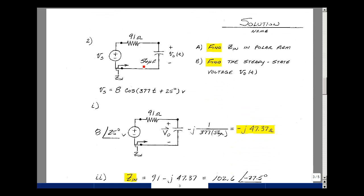Problem number two involves taking this RC circuit and finding Zin in polar form, and then finding Vout in steady state, given that the input is 8 cosine of 377t plus 25 degrees. From our chapter 8 notes, we have a three-step algorithm. Step one is to transform from the time domain to the frequency domain. Our voltage source is a cosine function, so we take the magnitude and angle as our phasor voltage. The resistance stays the same, and the capacitance becomes an impedance of minus j over omega c — with omega equal to 377 and c equal to 56 microfarads, giving minus j 47.37 ohms.